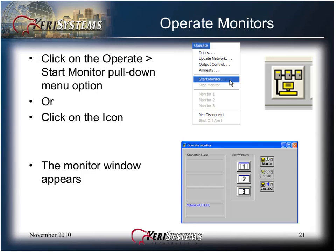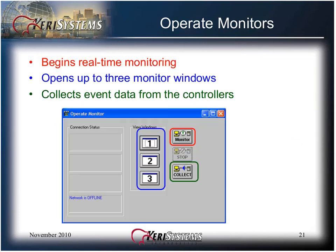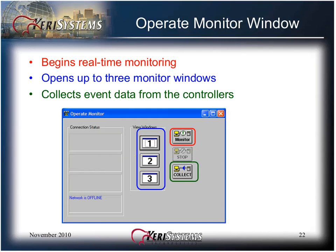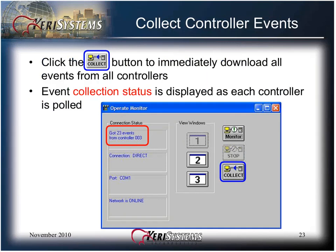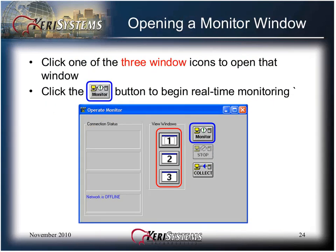To operate the monitors, click on the Operate pull-down menu and select Start Monitor, or click the toolbar button icon. The monitor window appears. The Operate monitor window begins real-time monitoring by clicking on the Monitor button, opens up to the three monitor views, and collects event data from the controllers by clicking the Collect button. Click the Collect button to immediately download all events from all controllers. Event collection status is displayed as each controller is polled. Click one of the three window icons to open that window, then click the Monitor button to begin real-time monitoring. Clicking on the Monitor button will first collect events from all controllers, then begin to monitor events in real-time.